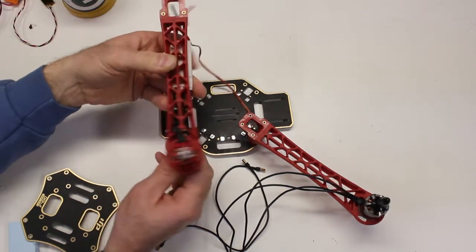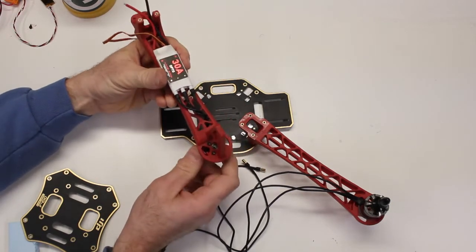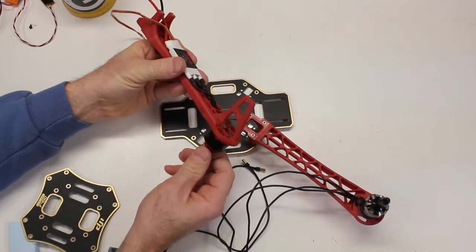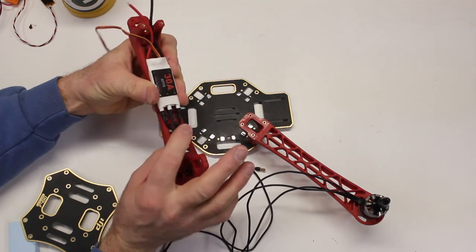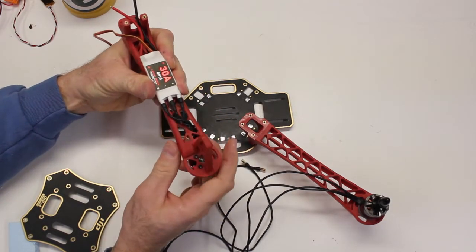So for a standard DJI arm, there's a million videos out there that show you how to do this. But you attach the motor, you run your wires down through a hole, you try not to give things the opportunity to rub.